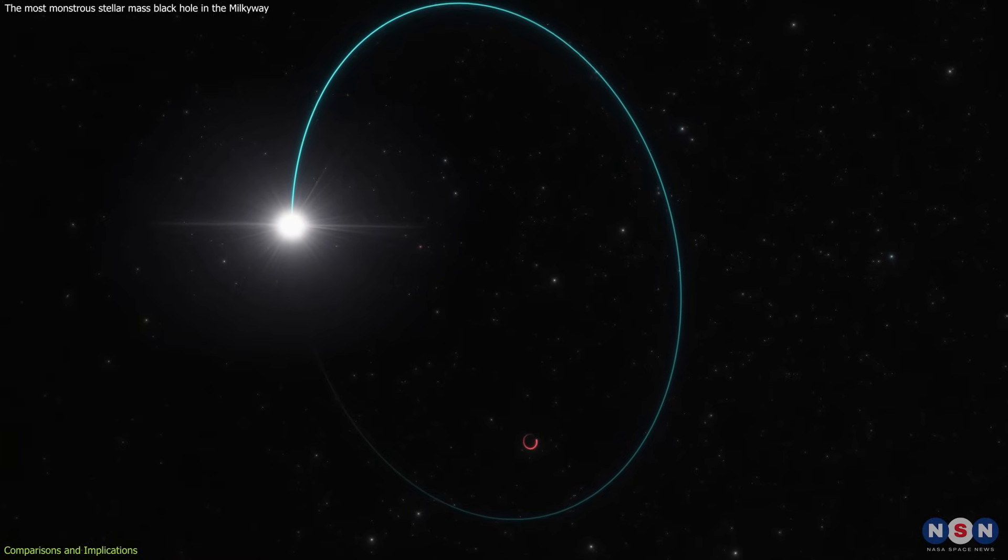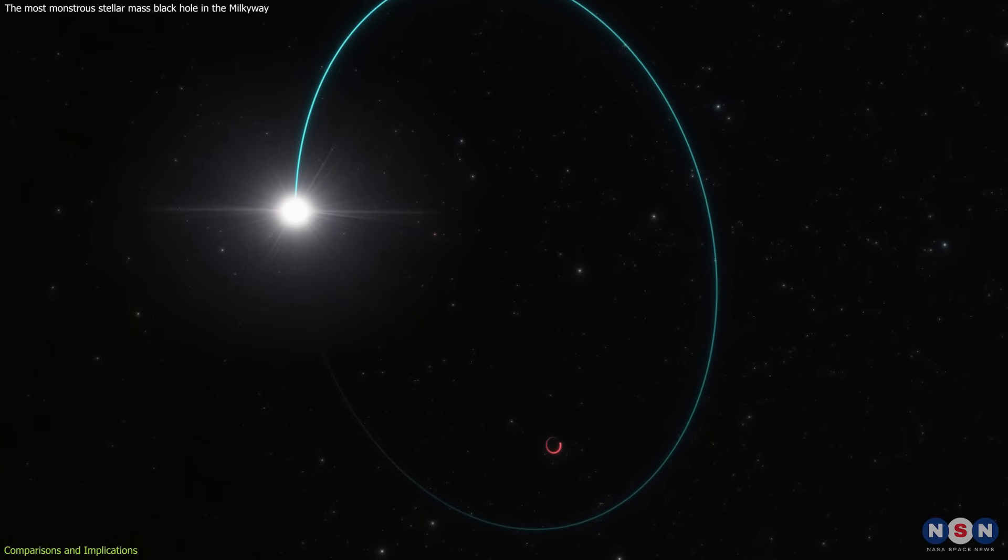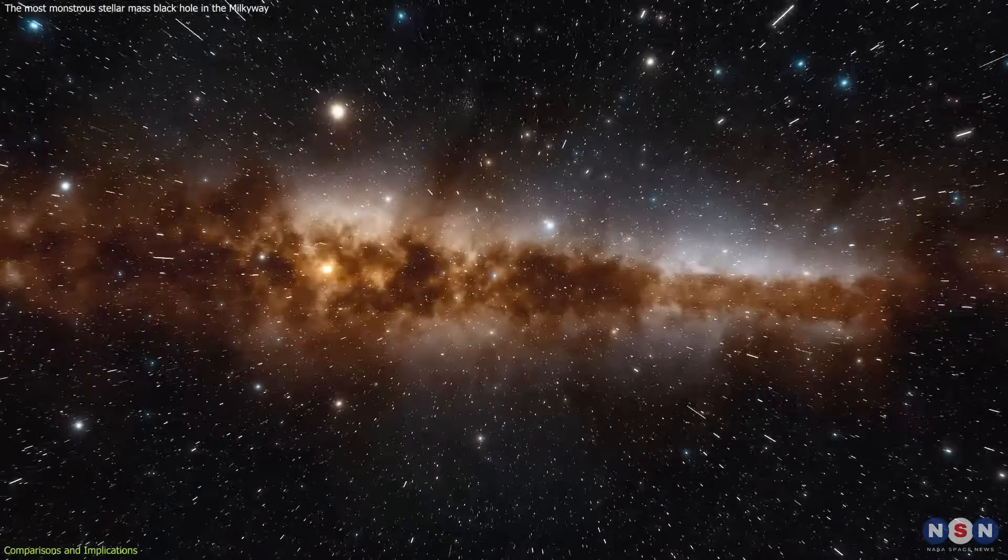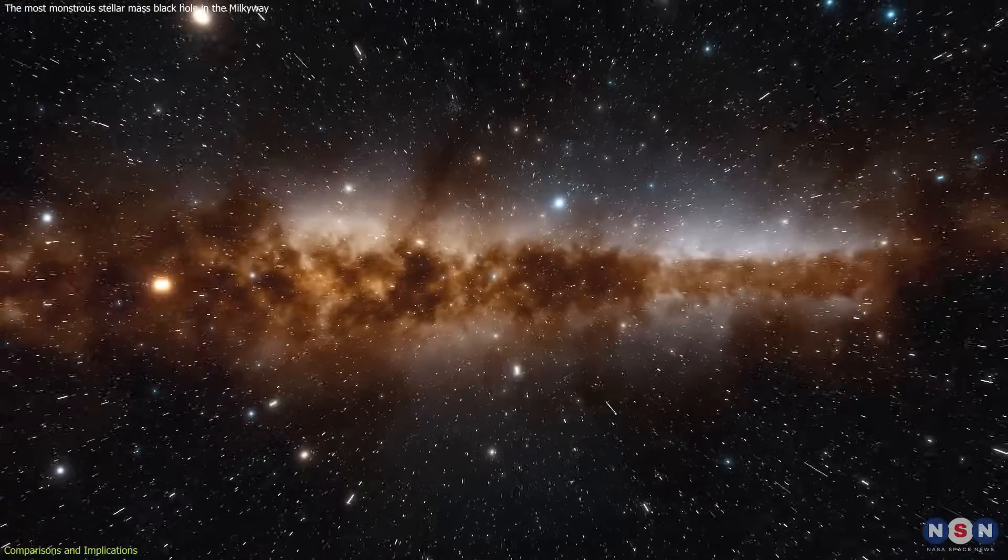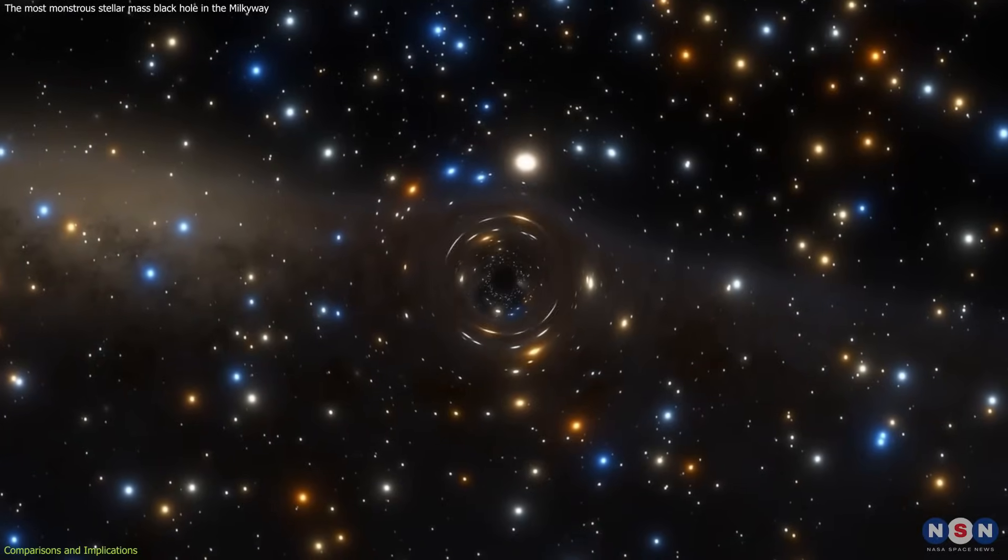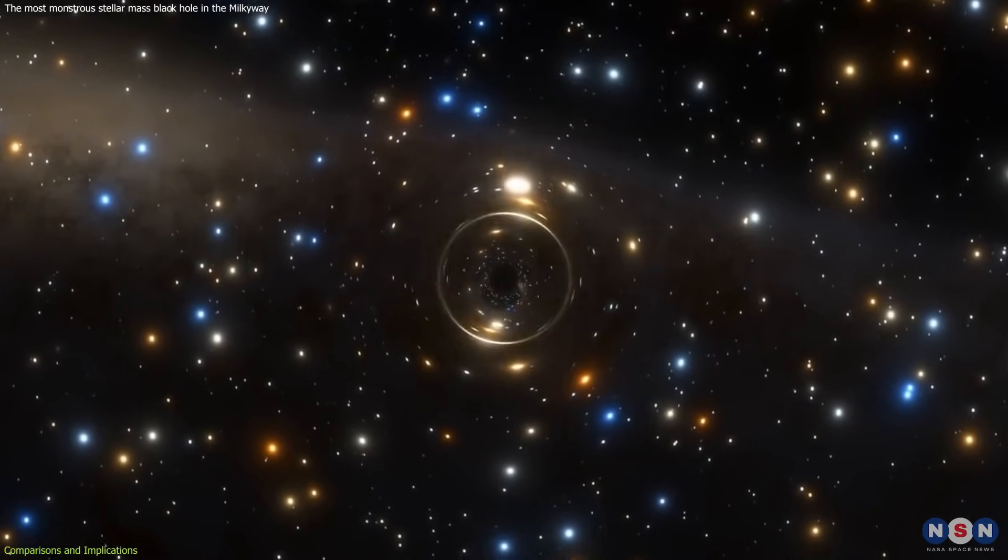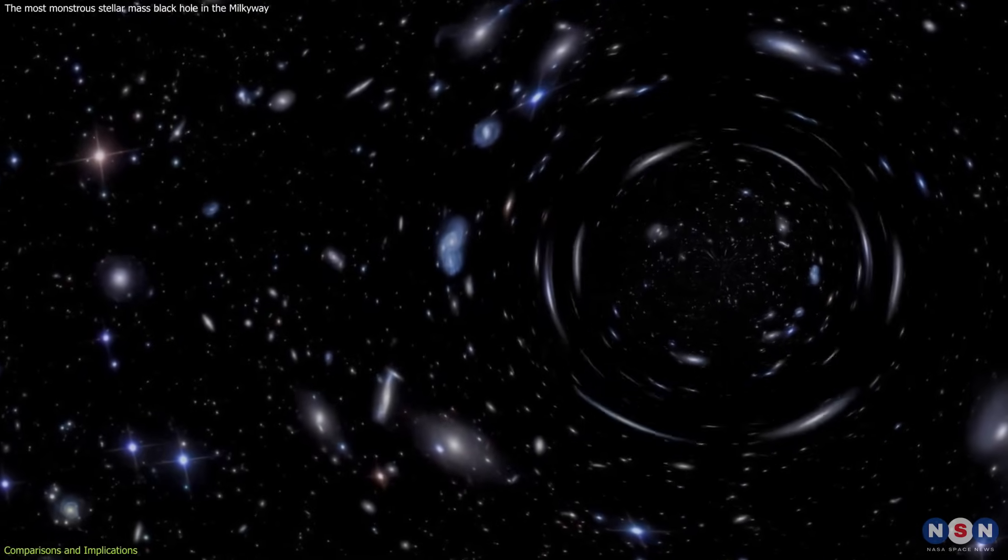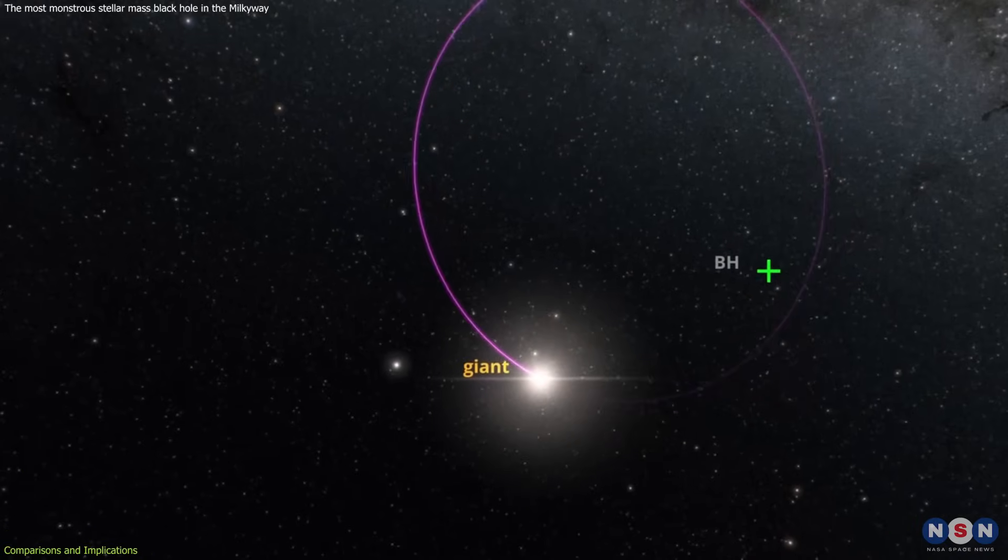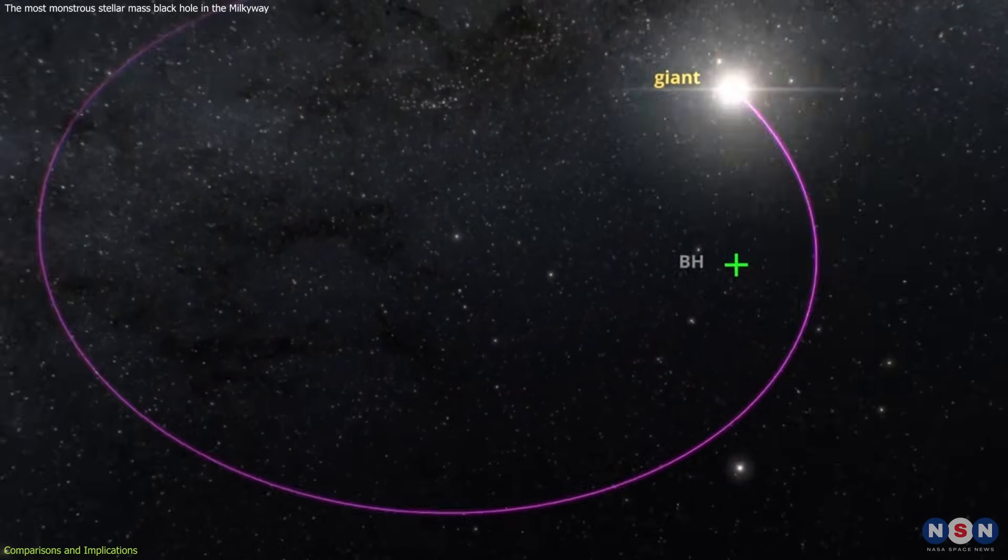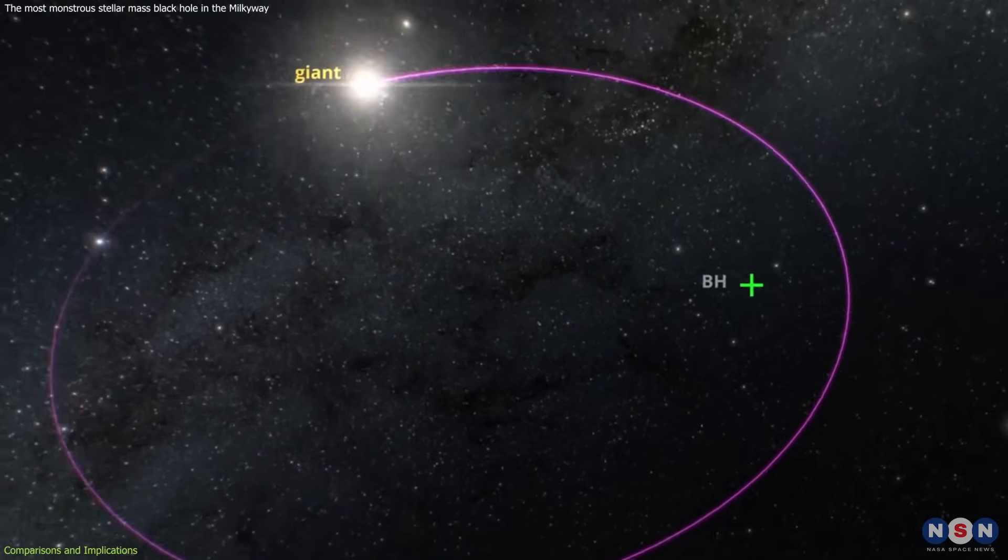Moreover, this discovery also affects not only the academic field, but has practical implications for our understanding of the dynamics of our local galactic neighborhood. Its gravitational influence could be playing a significant role in the orbital mechanics of nearby stars and the structure of the interstellar medium. This black hole acts as a test case for theories of gravitational interaction and the role of massive objects in shaping the galactic landscape.